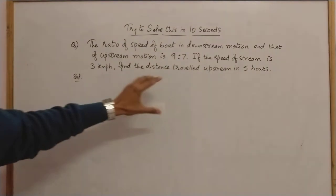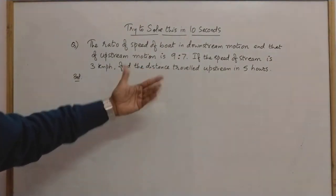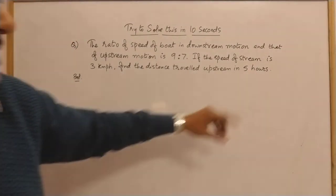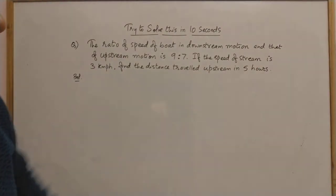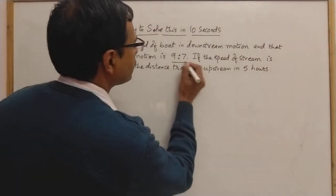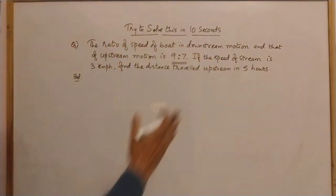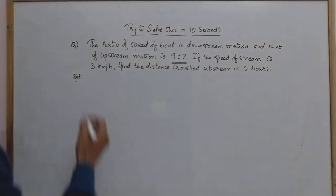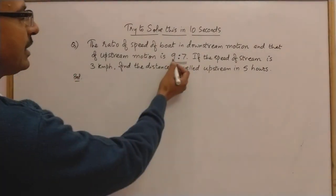To calculate the distance traveled, you should know the speed and time. Time is given as 5 hours, so you need to find the speed. How do you find the speed of the boat in upstream motion? The ratio of downstream and upstream speeds is given as 9:7, so how do you solve this in minimum amount of time?